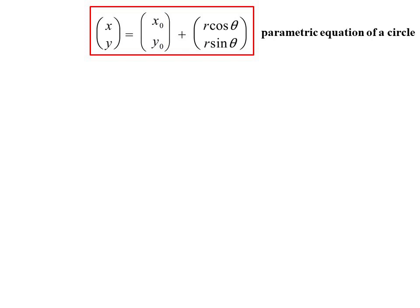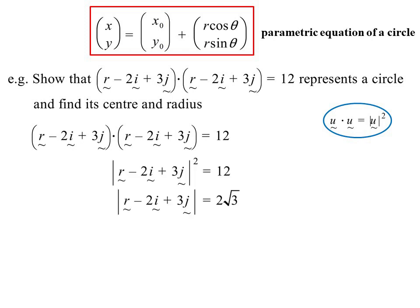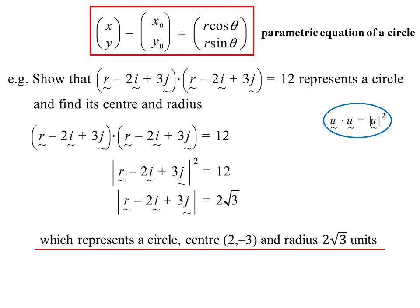I've written them as column vectors, but if you read across, you would get the parametrics, r being the parameter in this case. So let's show that this represents a circle. I've got the same thing dotted by itself. Well, u dot u is the magnitude of u squared, so that's the magnitude of r - 2i + 3j squared. Take the square root of both sides, and it's now in a form that we recognise to be a circle. The centre is the point (2, -3), and the radius is 2√3 units.